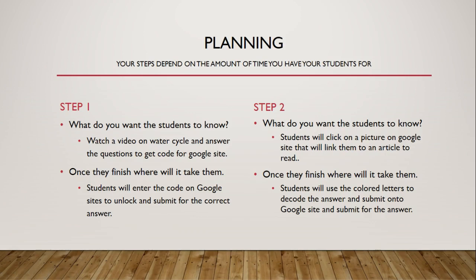In your planning, your steps depend on the amount of time you have your students. Step one: what do you want the students to know? For example, I want them to watch a video on the water cycle and answer questions to get a code for a Google Site. That video may focus specifically on the steps in the water cycle. Once they answer the questions, they get a code to enter into Google Site. Finishing the video and answering the questions takes students to the Google Site to unlock the code to submit for the correct answer.